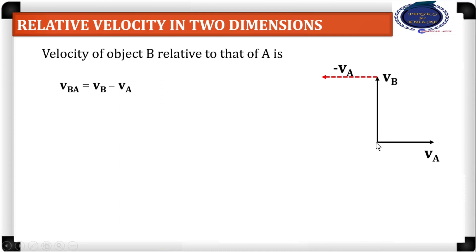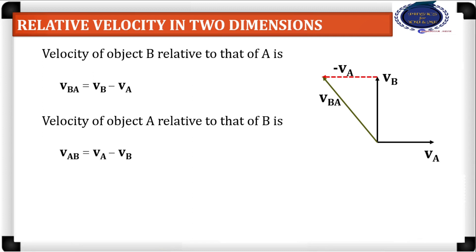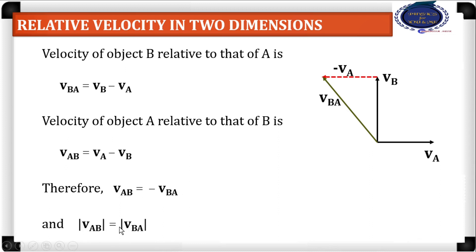Using the triangle law of vector addition, vB minus vA gives the resultant relative velocity vBA. Similarly, the velocity of object A relative to B is vAB equals vA minus vB. Therefore vAB is equal and opposite to vBA. The negative symbol indicates that vAB and vBA are opposite in direction, but their magnitudes are equal.